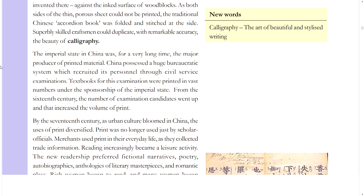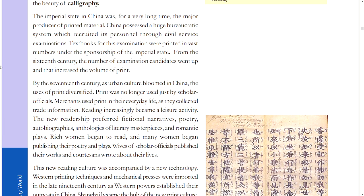The imperial state in China was, for a very long time, the major producer of printed material. China possessed a huge bureaucratic system which recruited its personnel through civil service examinations. Textbooks for this examination were printed in vast numbers under the sponsorship of the imperial state. From the 16th century, the number of examination candidates went up, increasing the volume of print. By the 17th century, as urban culture bloomed in China, the uses of print diversified. Print was no longer just for scholar-officials; merchants used print in their everyday life to collect trade information. Reading increasingly became a leisure activity, and new readership preferred fictional narratives, poetry, autobiographies, anthologies of literary masterpieces, and romantic plays.